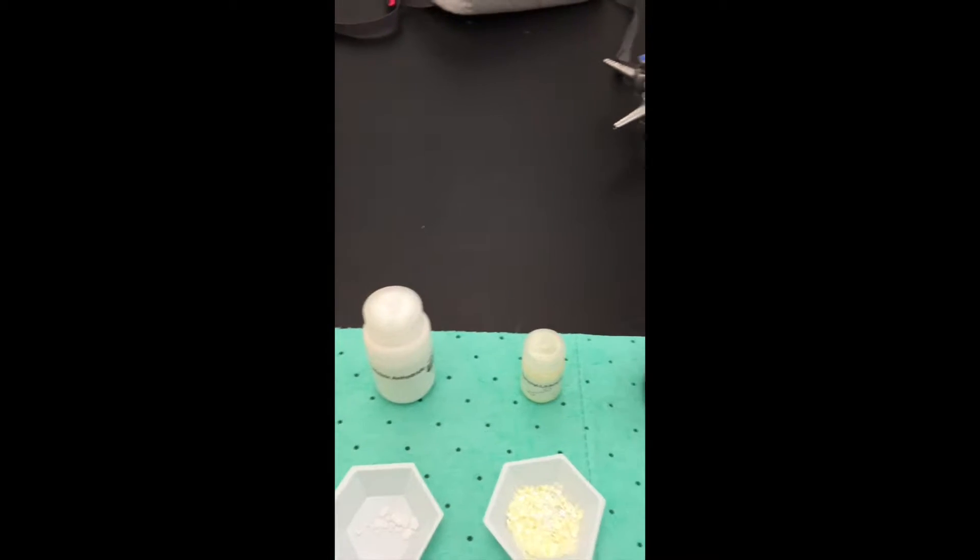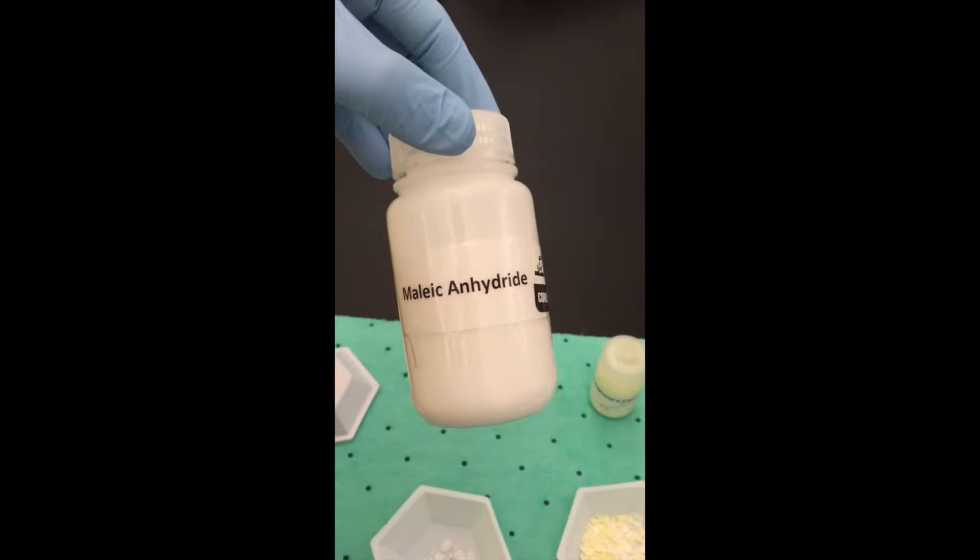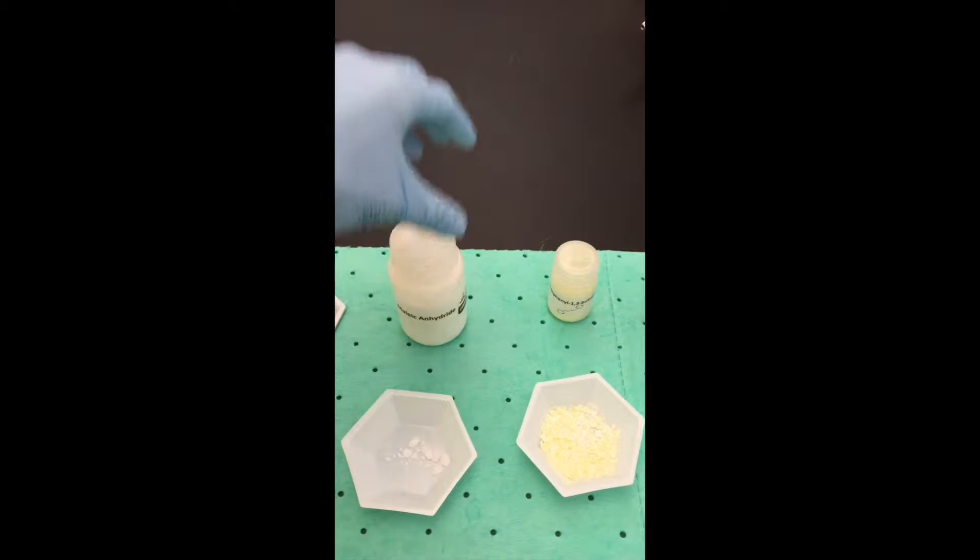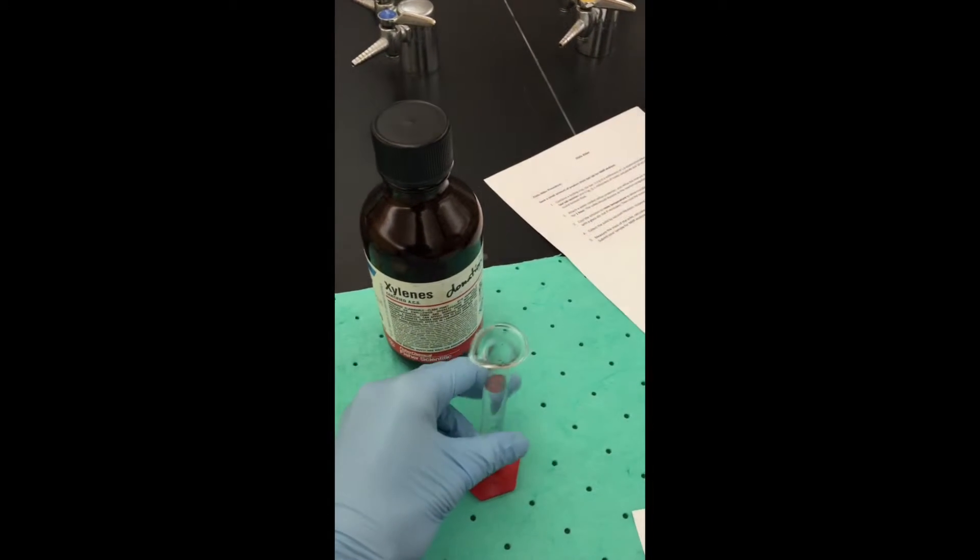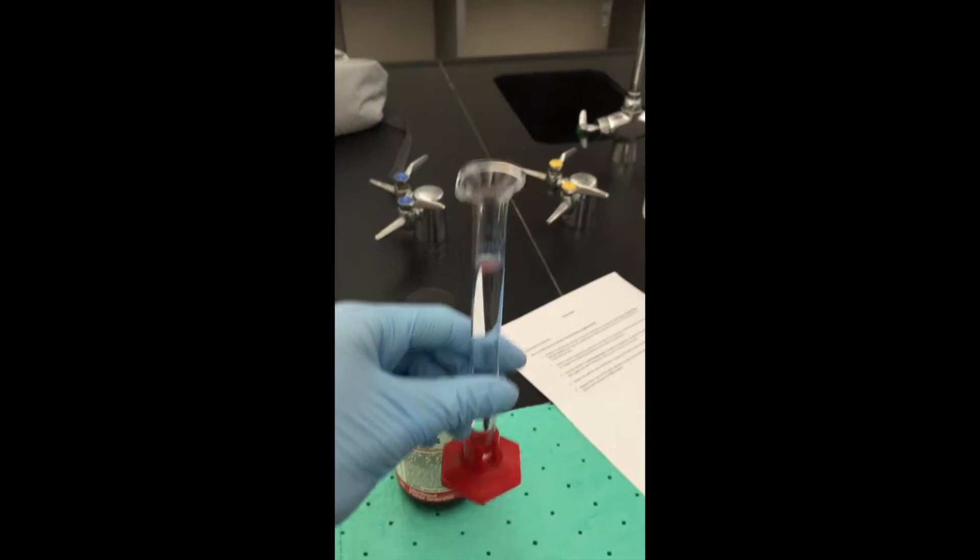We are also going to include half a gram of Maleic Anhydride. And we are going to put this into a 50 milliliter round bottom flask with 10 milliliters of xylenes.